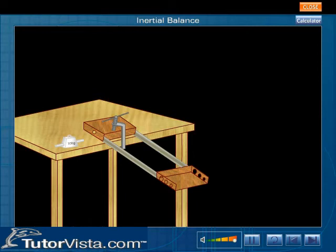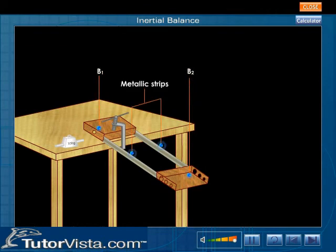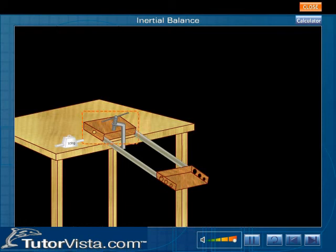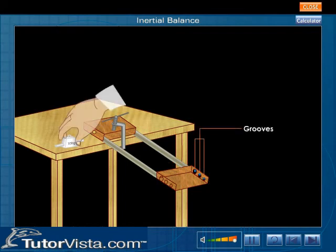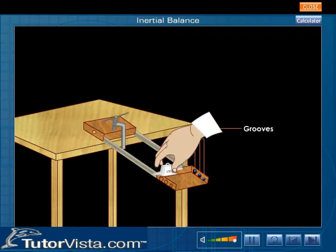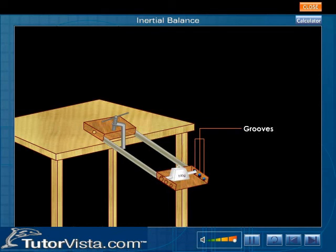It consists of two wooden boards, B1 and B2, joined by two metallic strips. The board B1 is clamped on a table and the board B2 projects out horizontally. The board B2 has grooves of different sizes for placing bodies in them to avoid their slipping during motion. The board B2 acts as a pan of the balance.